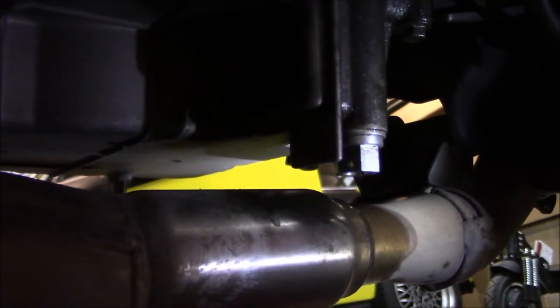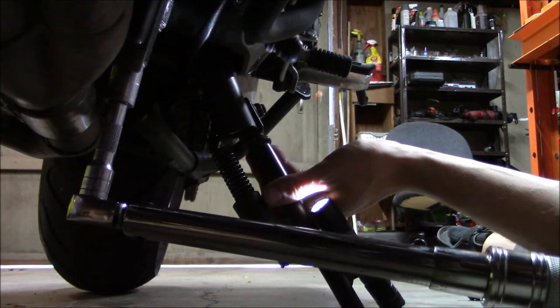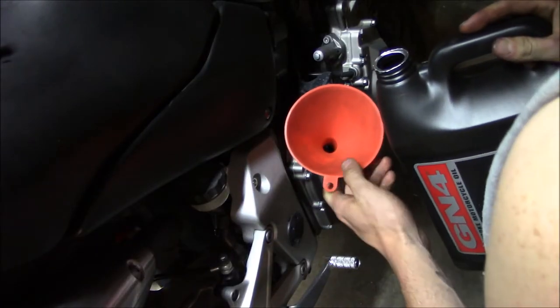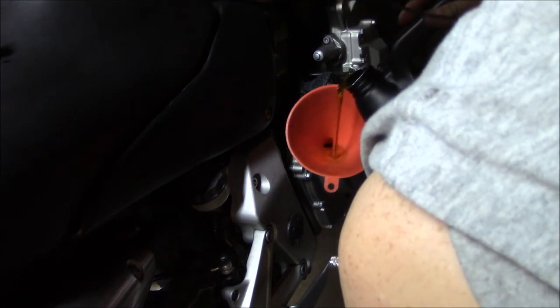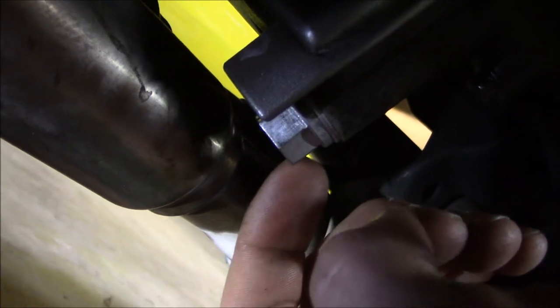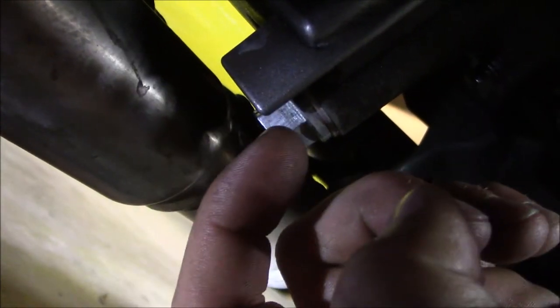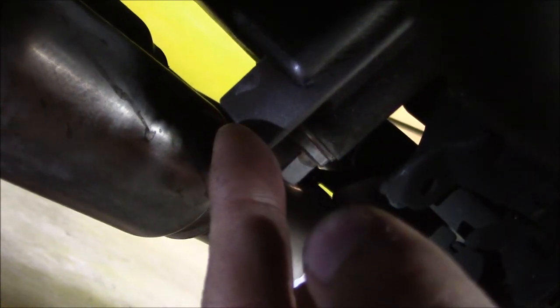Next it gets torqued to 22 foot-pounds according to the manual. To safety wire things properly, you should always braid it in the direction of tightening, which is this way. So now I'm just going to drill a hole in this protrusion from the engine case here.